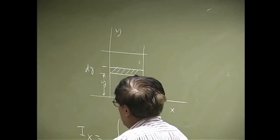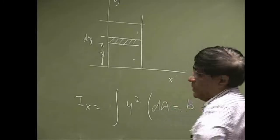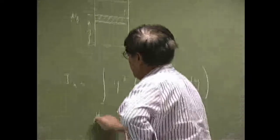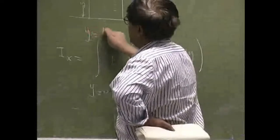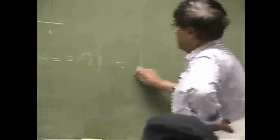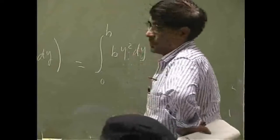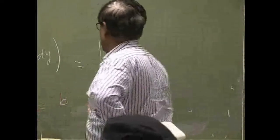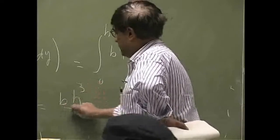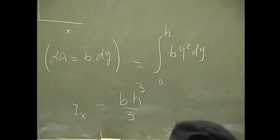So, Ix will be y squared. dA in this case is going to be the width, which is b. You multiply this by dy, and your limit is going to go from 0 all the way up to the height, which is h. This will be y squared, going to give you y cubed over 3 with the limit size h. So, you get b h cubed over 3. That is the inertia about the x-axis.